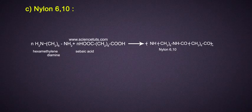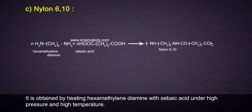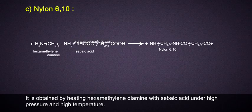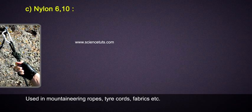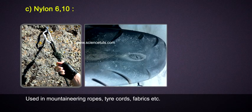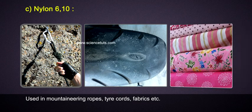Nylon 6-6 (variant): It is obtained by heating hexamethylene diamine with sebaic acid under high pressure and high temperature. It is used in mountaineering ropes, tire cords, fabrics, etc.